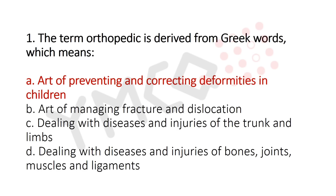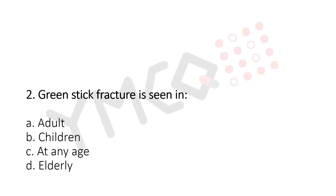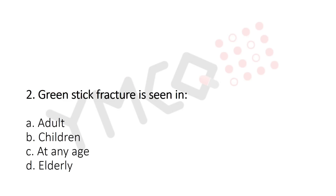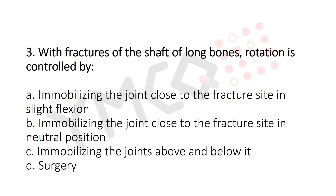Question 2: Greenstick fracture is seen in — option A: adult; option B: children; option C: at any age; option D: elderly. The answer is option B: children.